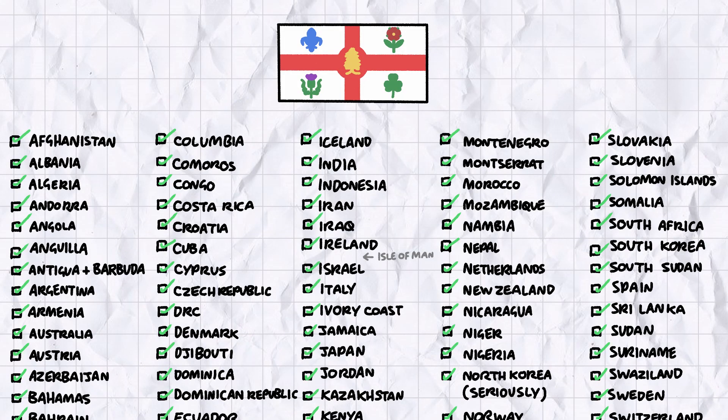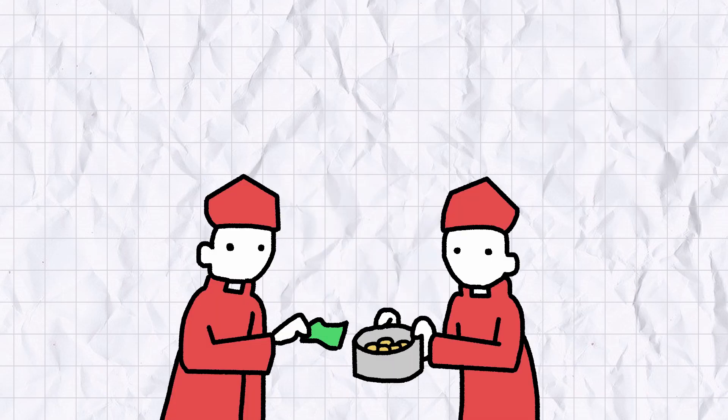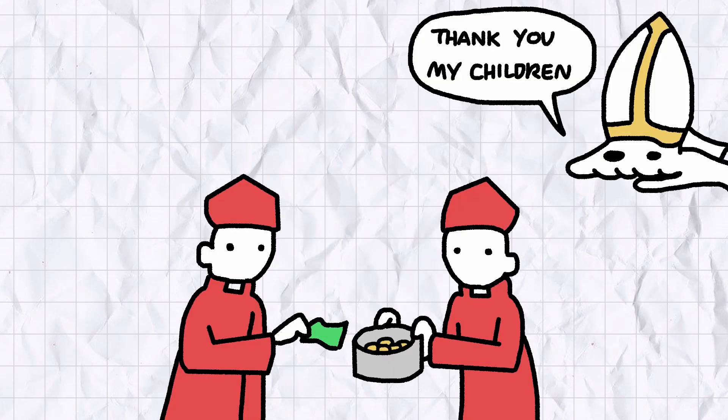To date, every nation in the world has ratified the terms of the Montreal Protocol, making it one of the most successful agreements of its kind in human history. They even got Vatican City to sign it, which—can I just say?—is adorable. What, did the senior cardinals have a whip-round the office and buy the Pope a new fridge?